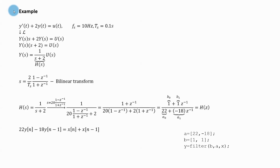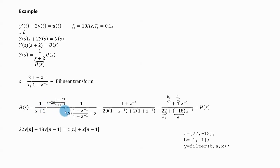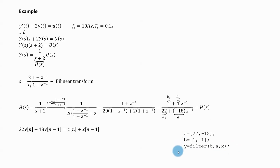Let's take a look at an example where I use the bilinear transform to discretize a continuous time system. I use a specified sampling frequency, which gives the corresponding sampling period. First, I compute the Laplace transform and find the transfer function. Then I apply the bilinear transform substitution, simplify the expression, and obtain the transfer function of the discrete time system. From this transfer function I can identify the system coefficients and implement the discrete system in MATLAB.